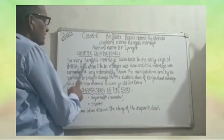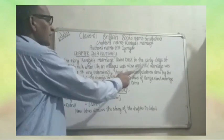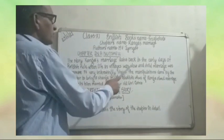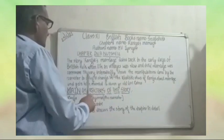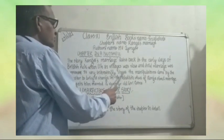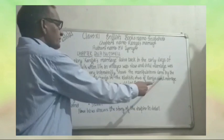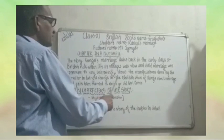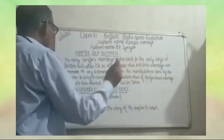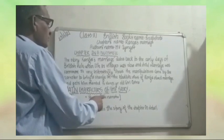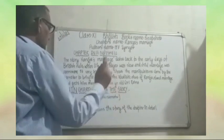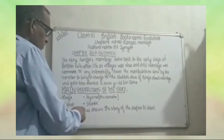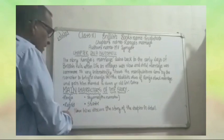The story Ranga's Marriage dates back to the early days of British rule, when life in villages was slow and child marriages were common. It very interestingly shows the manipulations done by the narrator to bring a change in the idealistic view of Ranga about marriage and gets him married to an 11-year-old girl, Ratna. The main characters of the story are Ranga, Shama the narrator, Ratna, and Shastri.